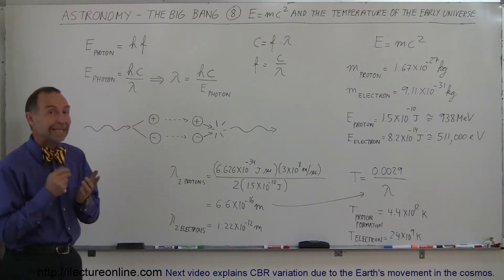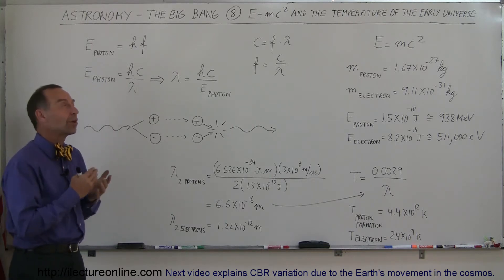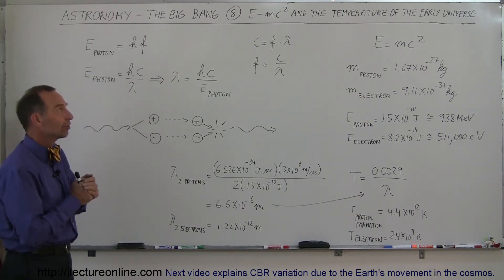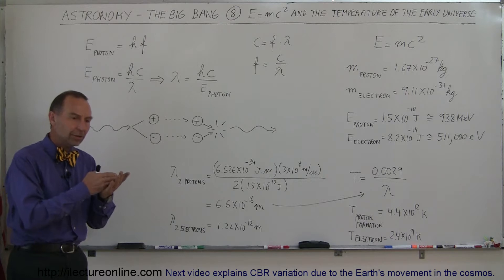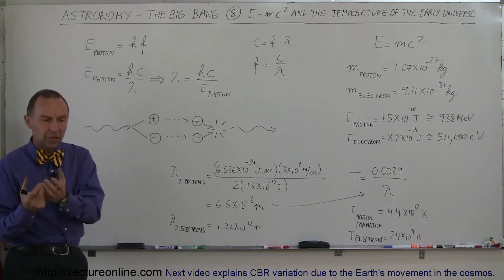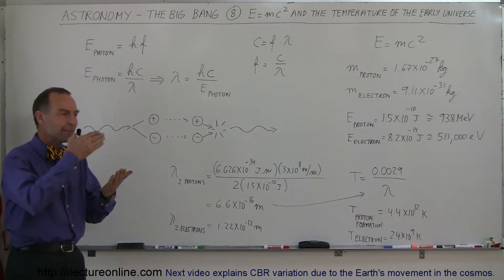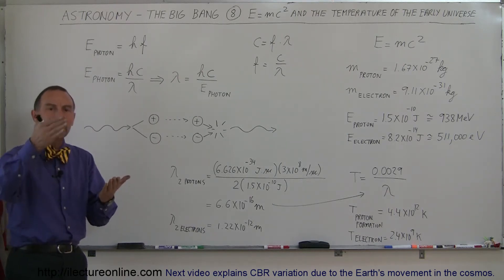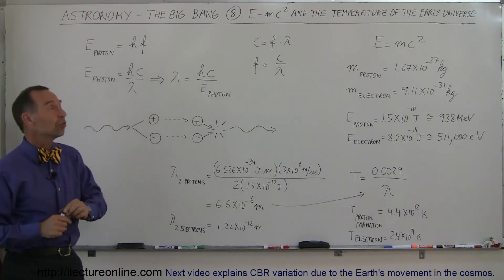So here we're going to talk about E equals mc squared, probably the most known and famous equation on Earth in physics, and how it relates to the temperature of the early universe. What Einstein discovered was that matter that has mass and energy were basically the same thing in different forms. He said that mass can change into energy, and energy can change into mass, and the equation they're related to was E equals mc squared.